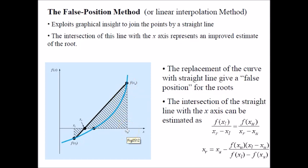If you take a linear line and draw from your fxl towards your fxu, you will have an intersection here, a point that intersects with the x-axis. Now you can call this point your xr, the estimation of your root. This is the intersection of this line with the x-axis representing an improved estimate of the root.